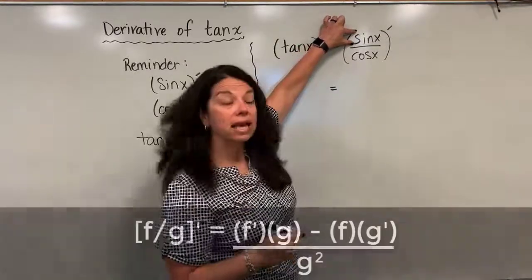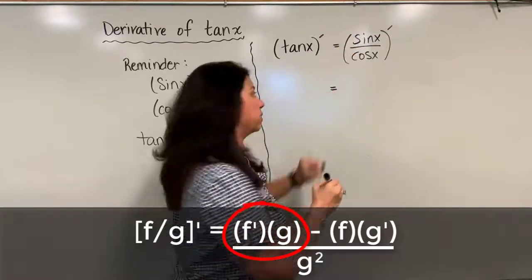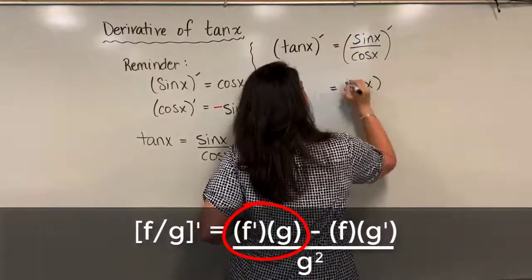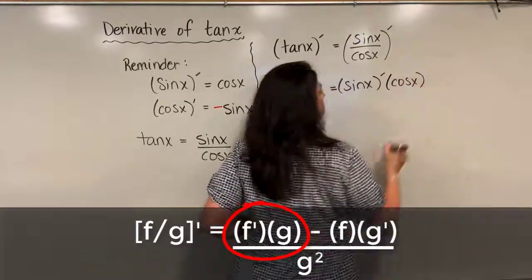Quotient rule just as a reminder says I need to take the derivative of the numerator times the denominator. So I start off with sine x's derivative times cosine x which was my denominator.